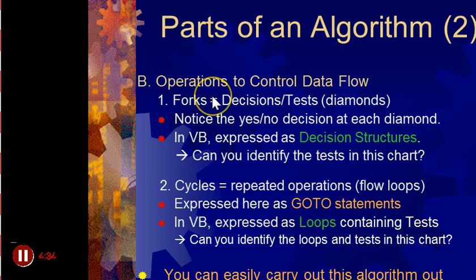In VB, expressed as decision structures. These are called decision structures. So this is like, we saw the if-then statement in our last program, the slot machine. That would be if something, then yes. If not, then no. So that's called a decision structure, if-then.